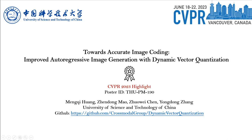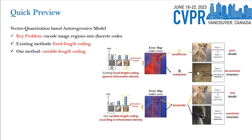My name is Meng Qi Huang, currently a PhD student at the University of Science and Technology of China. I will introduce our CVPR highlight paper titled Towards Accurate Image Coding and Improved Autoregressive Image Generation with Dynamic Factor Quantization. We focus on the popular vector quantization-based autoregressive models, whose key problem lies in encoding image regions into discrete codes. Existing methods adopt fixed-length coding that encodes fixed-size image regions into fixed-length codes, which is insufficient for important regions or redundant for unimportant ones. We propose variable-length coding that encodes image regions according to their different information densities, to achieve accurate and compact code representation.